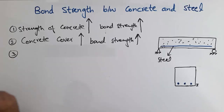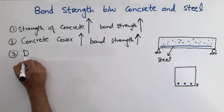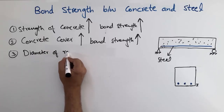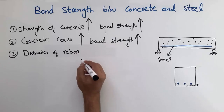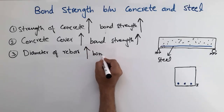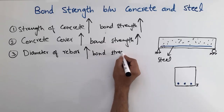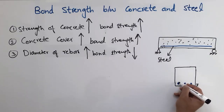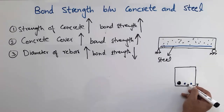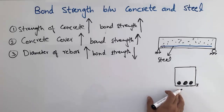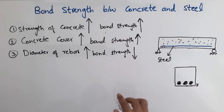The third factor is the diameter of the steel bar. If you have a larger diameter of the bar, then our bond strength decreases. If we are using a larger diameter of the bar, the bond strength will not be as good as with a smaller diameter bar. To increase the bond strength, we have to use a smaller diameter of the bar.